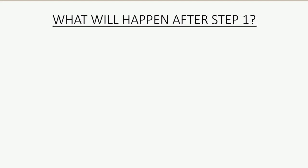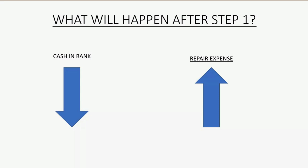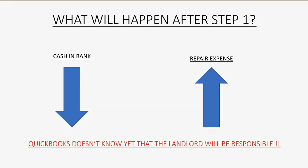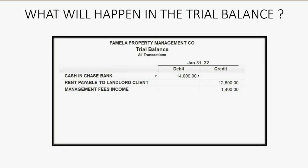After we record a check for repair expense, our company's repair expense will show an increase, and because we paid cash from the bank, the bank account will decrease. QuickBooks doesn't know yet that the landlord will be responsible. So repair expense will show up in the trial balance for the first time as two hundred dollars, and the bank account will decrease and become thirteen thousand eight hundred.